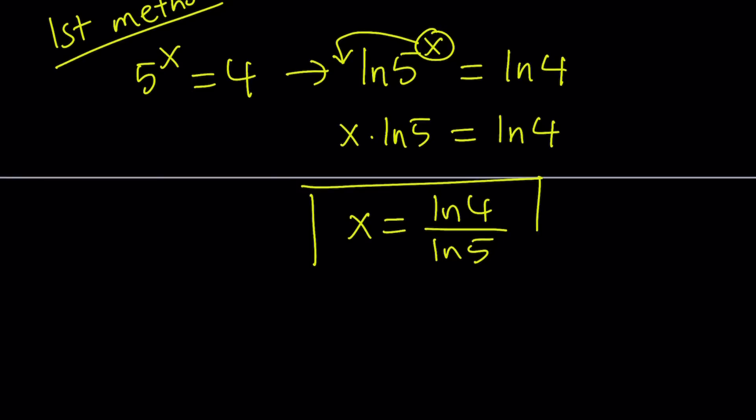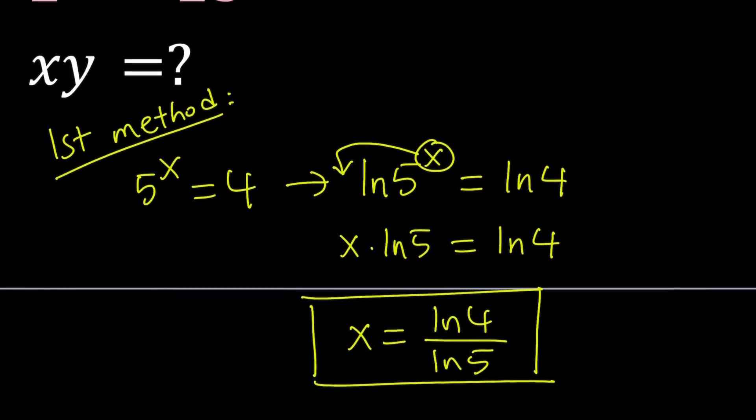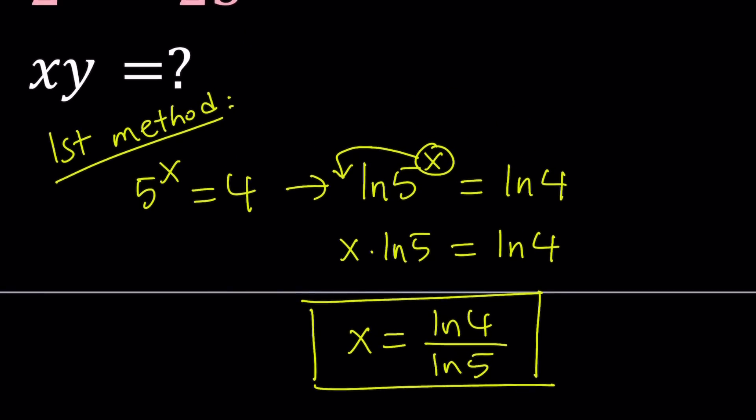Isolating x would be helpful in this case because our goal, always keep that in perspective, we're trying to find xy. So it would make sense if you could find x and y numerically and then multiply together.